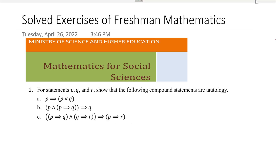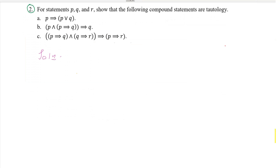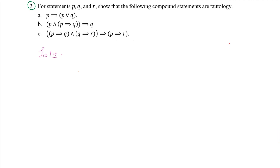Hello, in this video I will be solving some of the problems from freshman mathematics. Question number two says: for statements P, Q, and R, show that the following compound proposition statements or propositions are tautology.